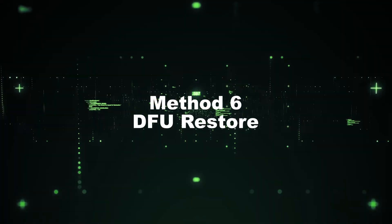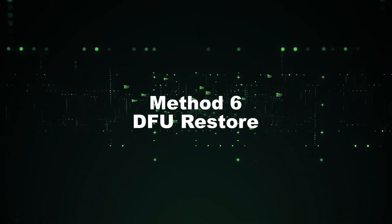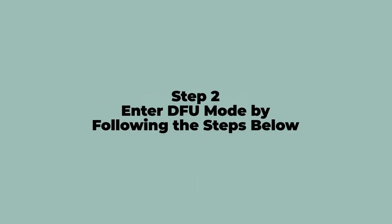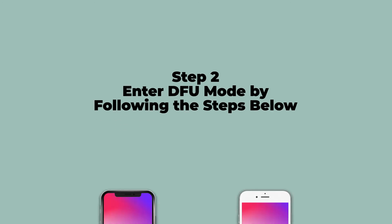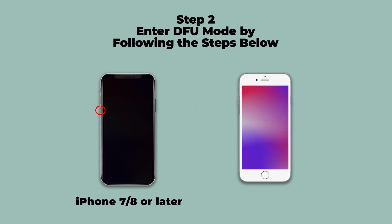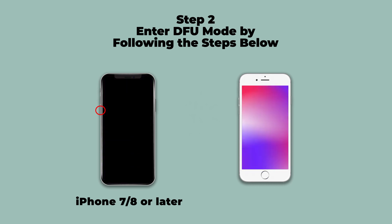Method 6: DFU Restore. DFU Mode is our next solution if reducing brightness does not work. Step 1: Connect iPhone to PC, launch iTunes, and switch off the iPhone. Step 2: Enter DFU Mode. For iPhone 7, 8, or later, hold down the Power Button and Volume Down Button for about 10 seconds, then release the Power Button and keep holding the Volume Down Button for 5 seconds. When the screen goes dark, you are in DFU Mode.